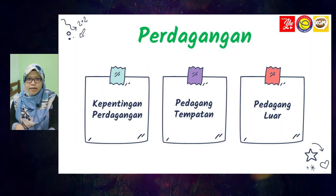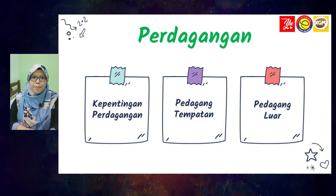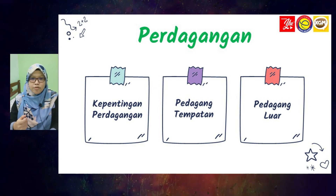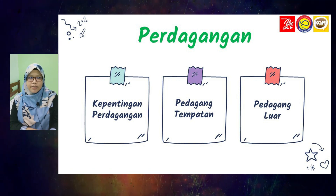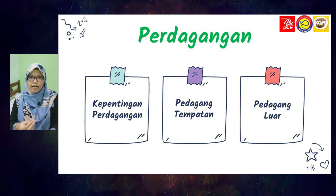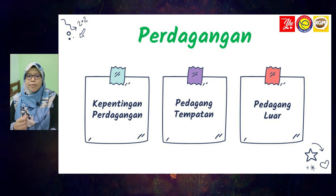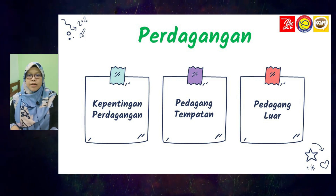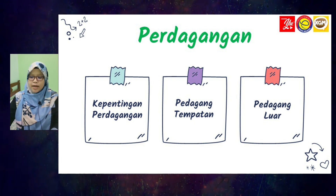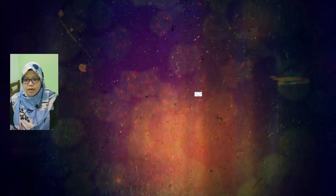Aktiviti kedua yang dijalankan oleh masyarakat Kerajaan Alam Melayu adalah aktiviti perdagangan. Perdagangan adalah daripada perkataan dagang — maksudnya kita menjalankan aktiviti jual beli. Dalam perdagangan ini kita akan tengok kepentingan perdagangan, pedagang tempatan dan juga pedagang luar. Kenapa perdagangan ini penting? Ada tiga.